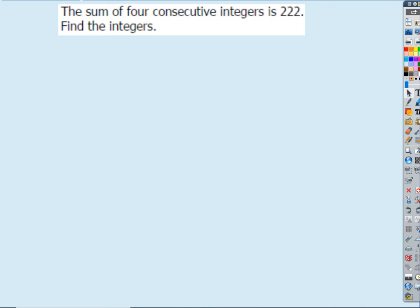So what about this case? The sum of four consecutive integers is 222. What does it mean to be consecutive integers? One, two, three, four. Negative seven, negative six, negative five, et cetera, right? So in a row.